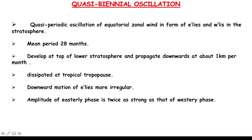Quasi-Biennial Oscillation — oscillation means something which happens at regular intervals. However, 'quasi-biennial' means the oscillation period is not fixed. Sometimes it takes place at 28 months, sometimes at 29 months. QBO is basically an equatorial zonal wind in the lower stratosphere, where there is alternating movement of easterlies and westerlies just above the equator.